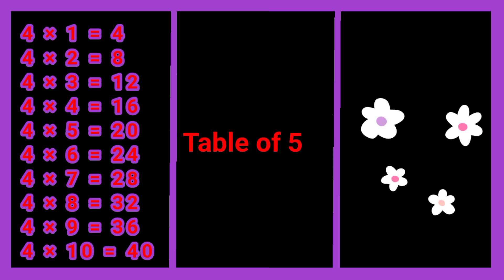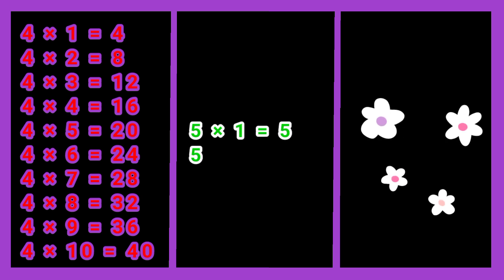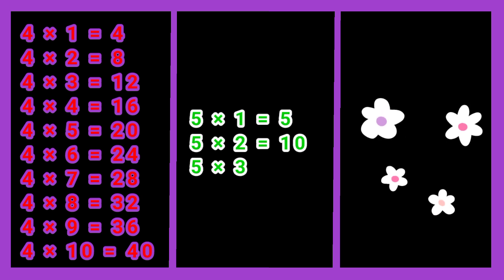Multiplication Table of 5. 5 times 1 jah 5. 5 times 2 jah 10. 5 times 3 jah 15.